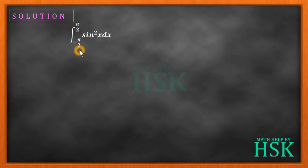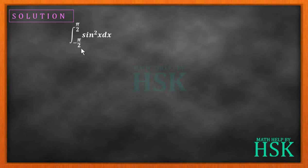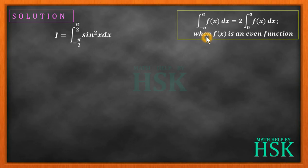When we have been given a function having limits in this fashion — that is, minus pi by 2 to pi by 2 — we have a property which is related to such type of limits. First of all, we assume that this integral is equal to I.